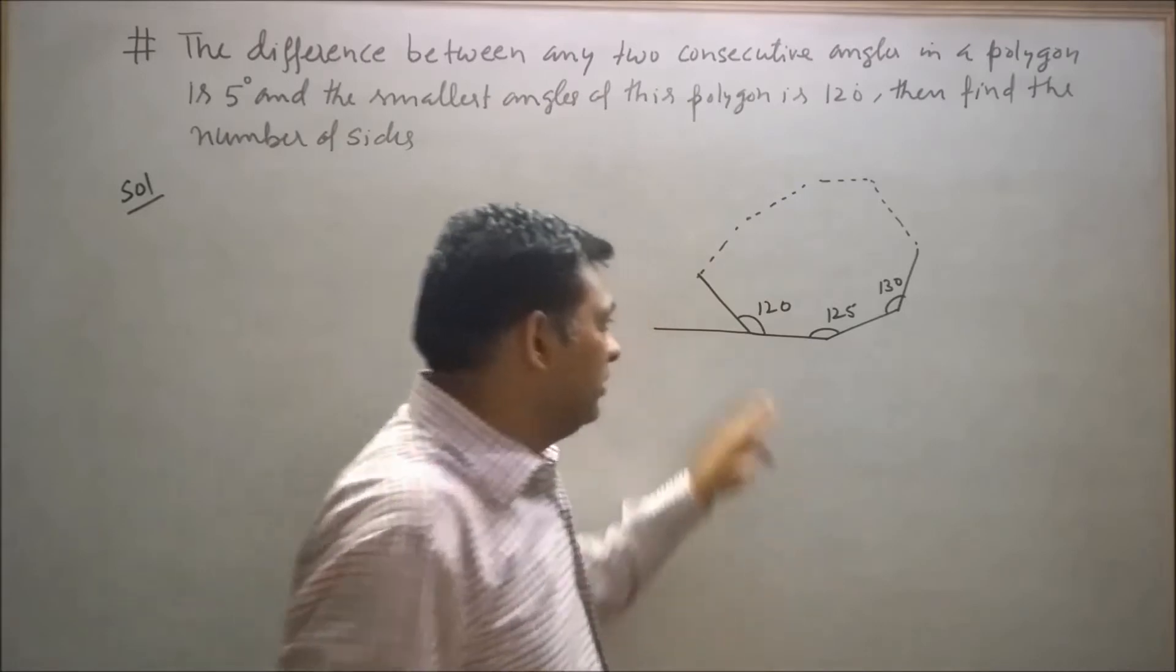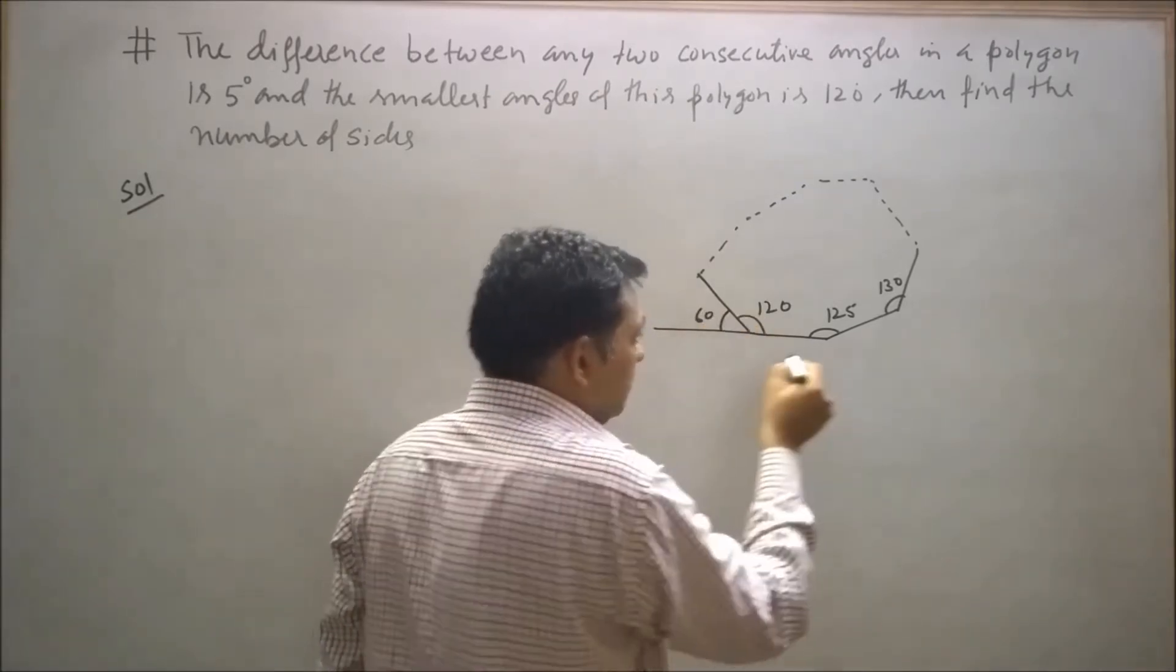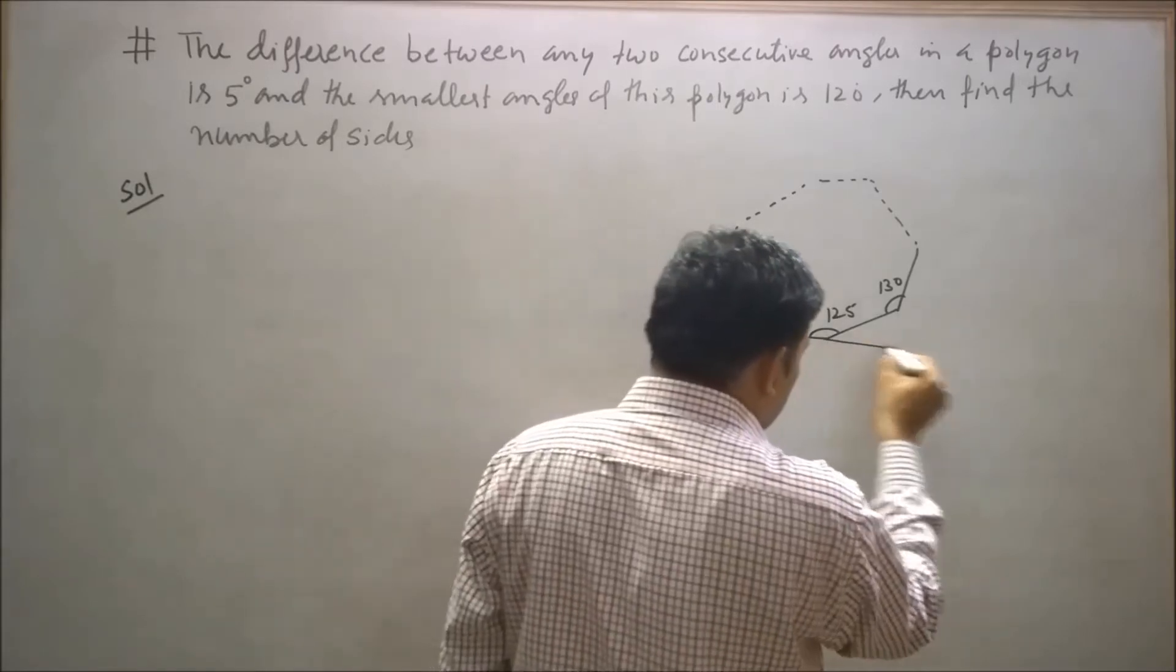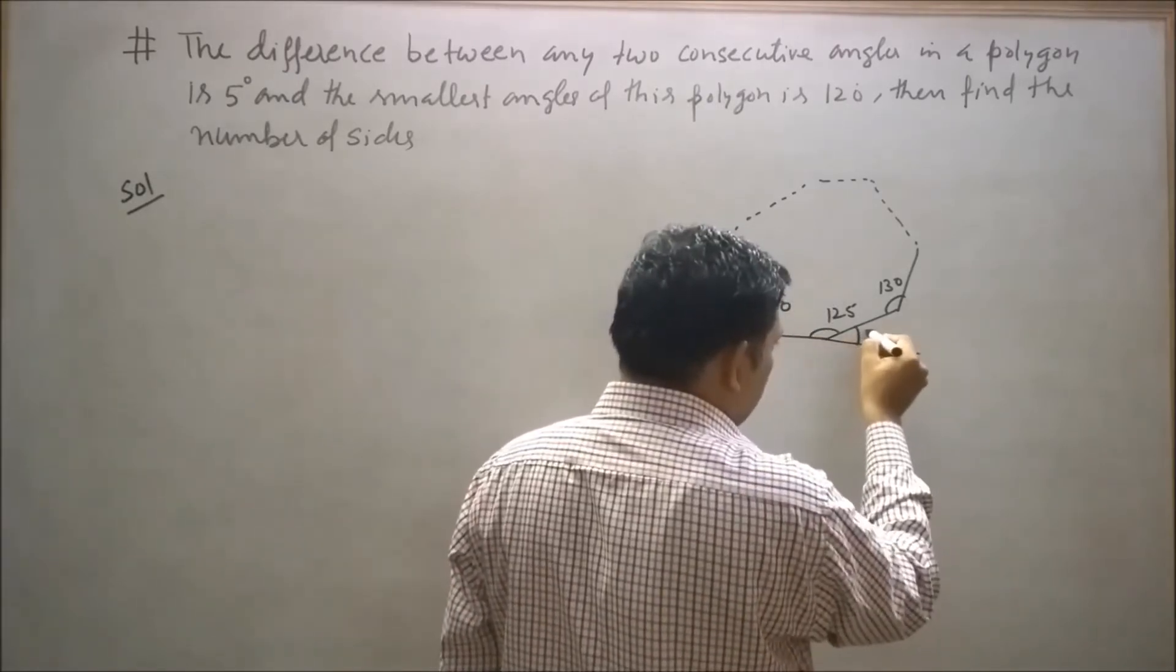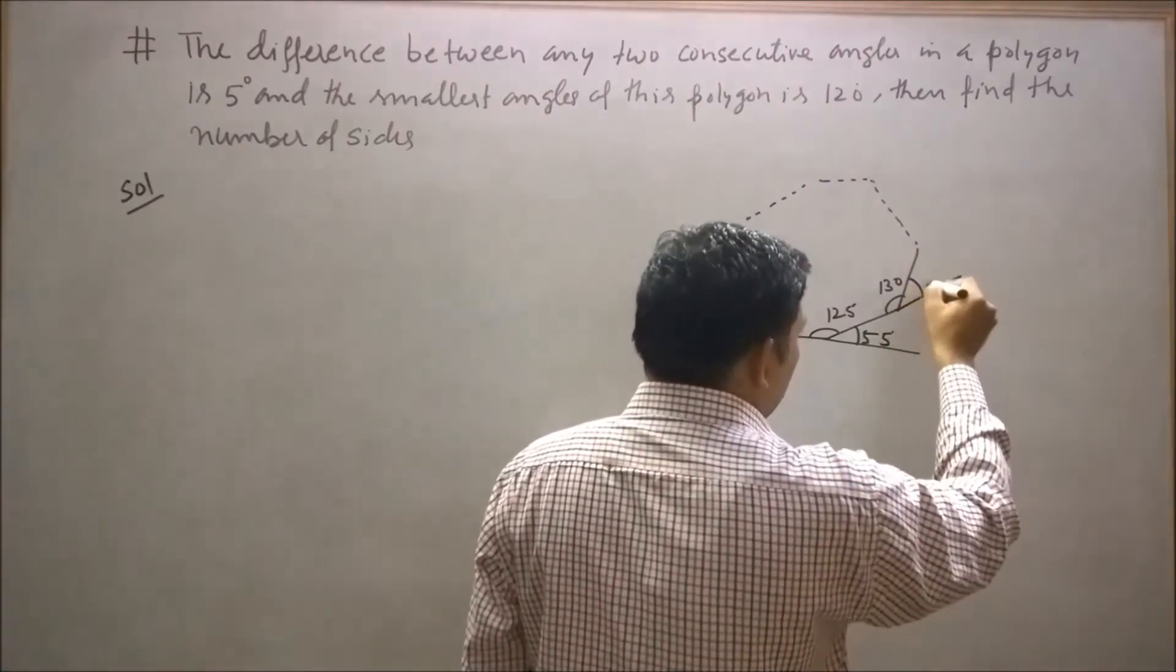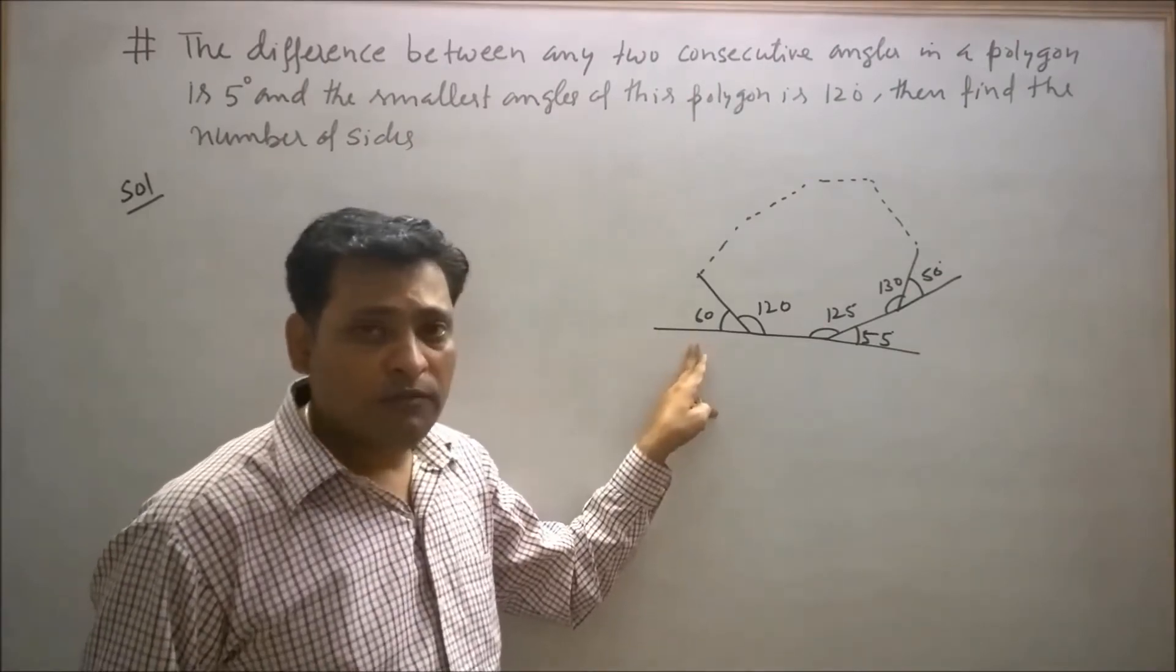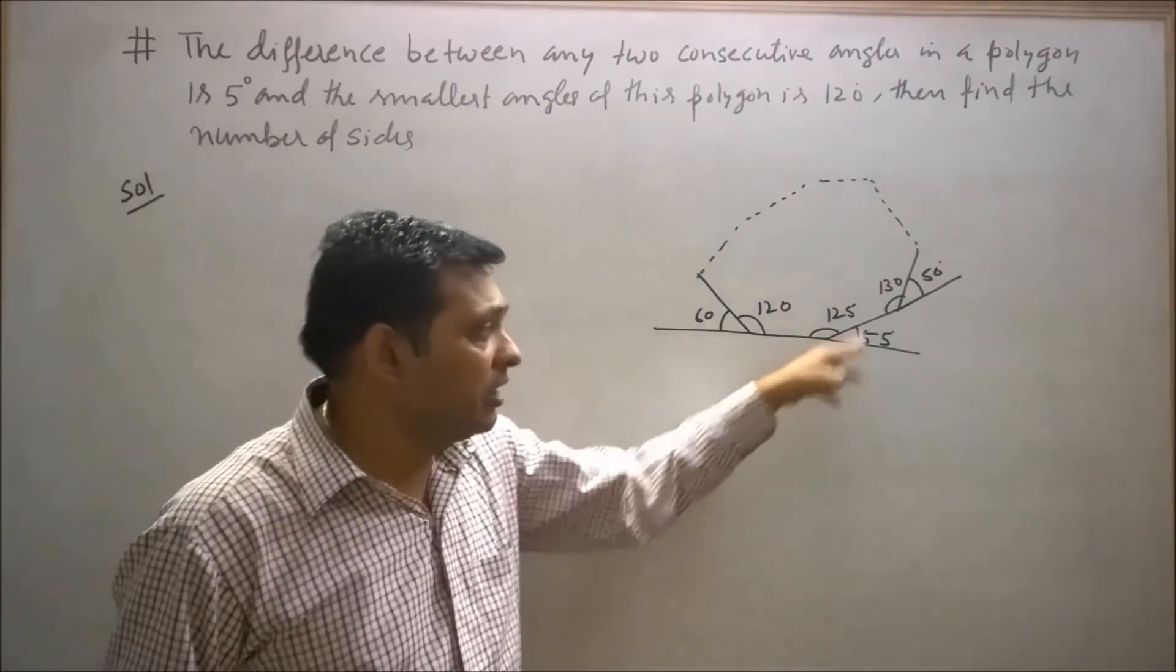If we draw its exterior angles, then by linear pair angles this will be 60 degrees. Similarly we can find this exterior angle as 55 degrees and this will be 50 degrees and so on. We can easily observe that all exterior angles are in AP.